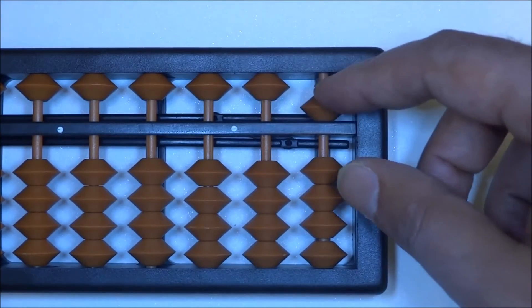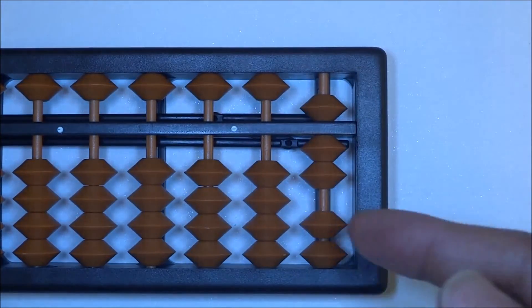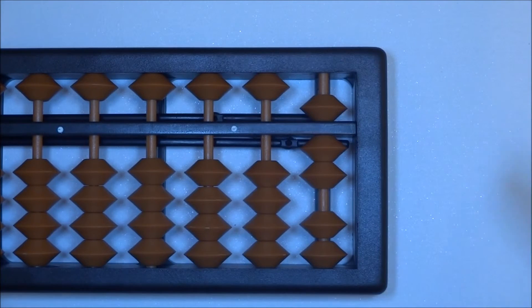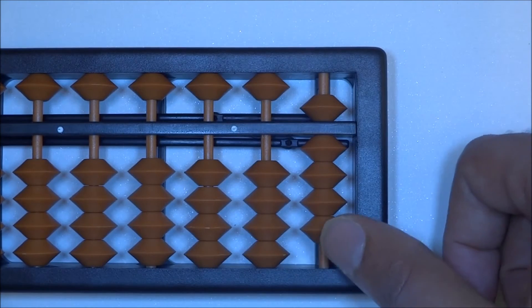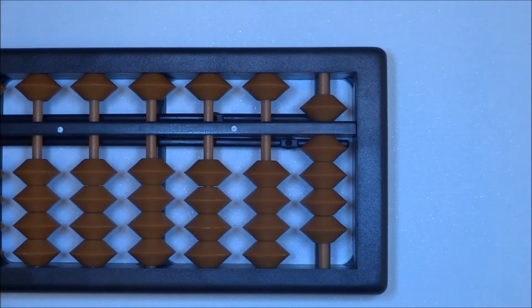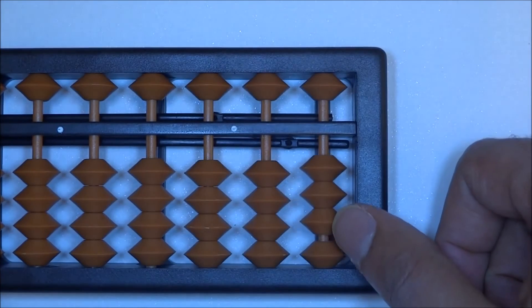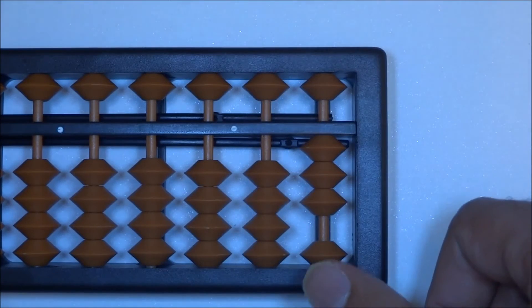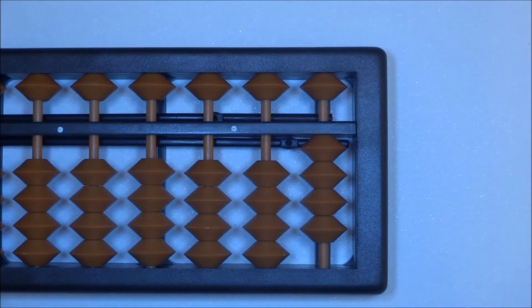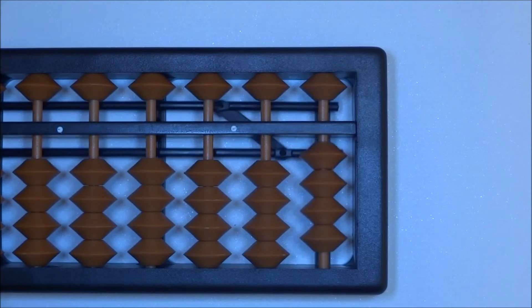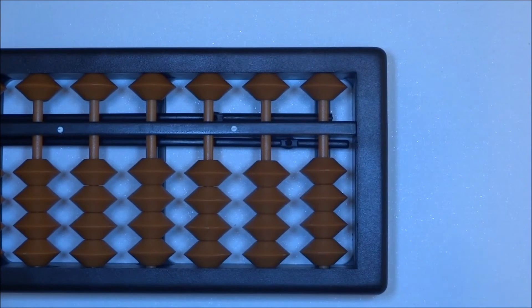Next is 7 plus 2. So how do we represent 7? We're going to move up 5 and we're going to move up 2, and we already have 7 here. 7 plus 2, plus 2 meaning up 2, here we go and we have answer of 9. Let's try some more: 3 plus 1. Up 3 plus 1, 4. Reset. 2 plus 6.